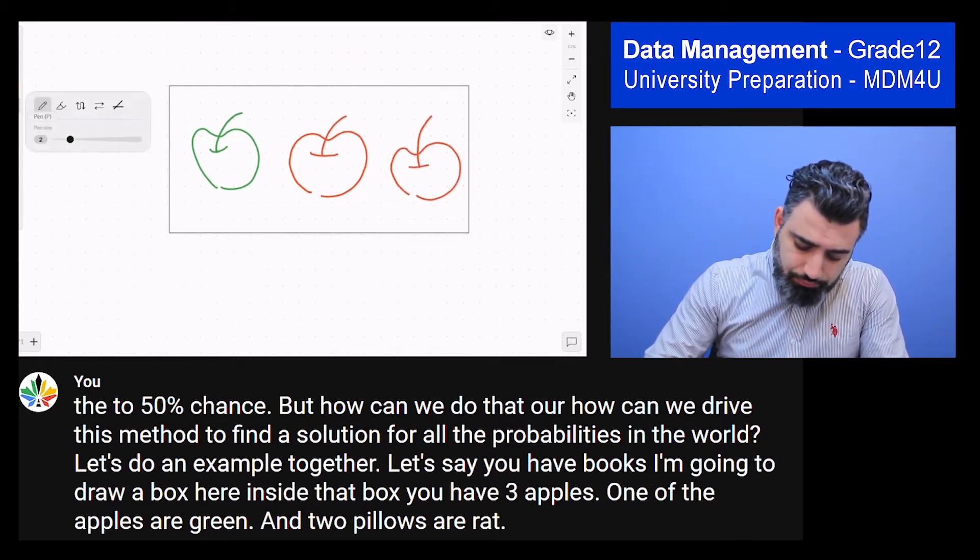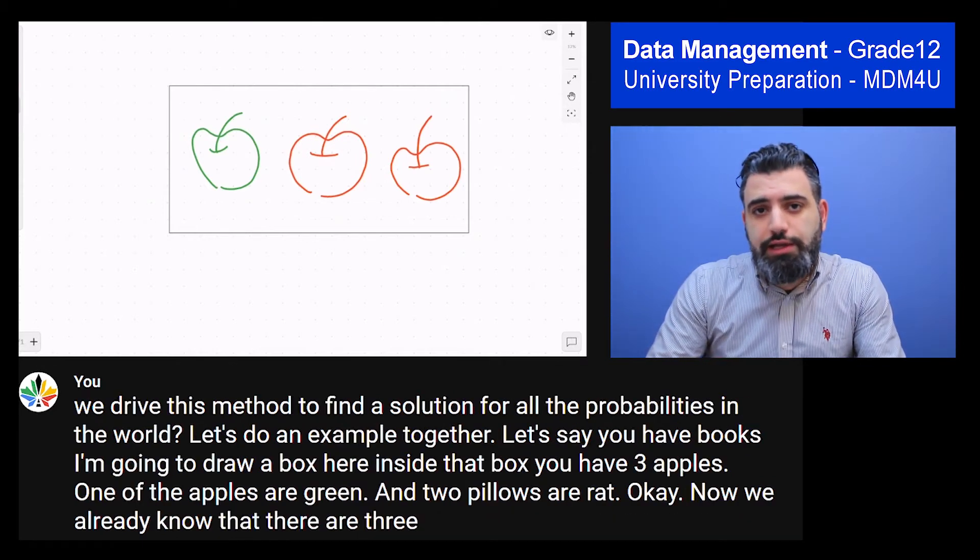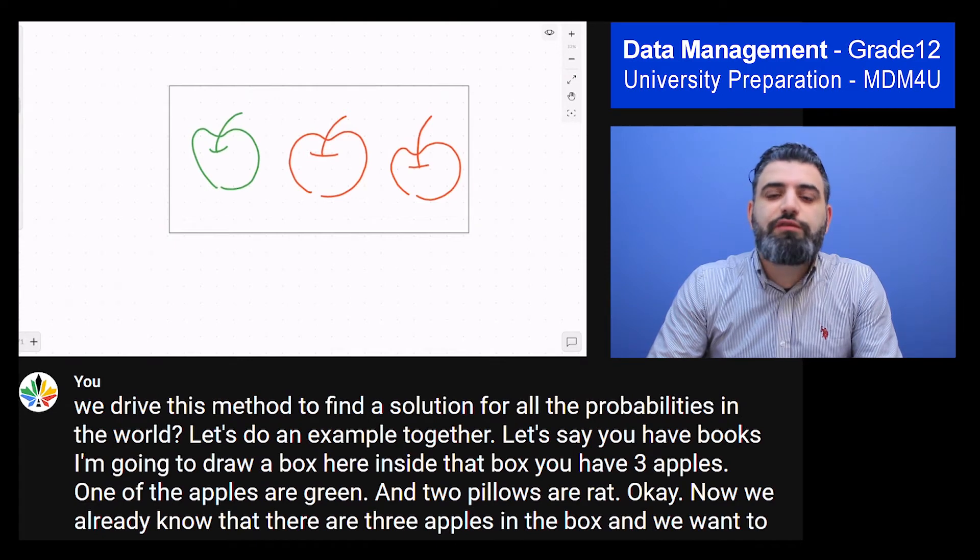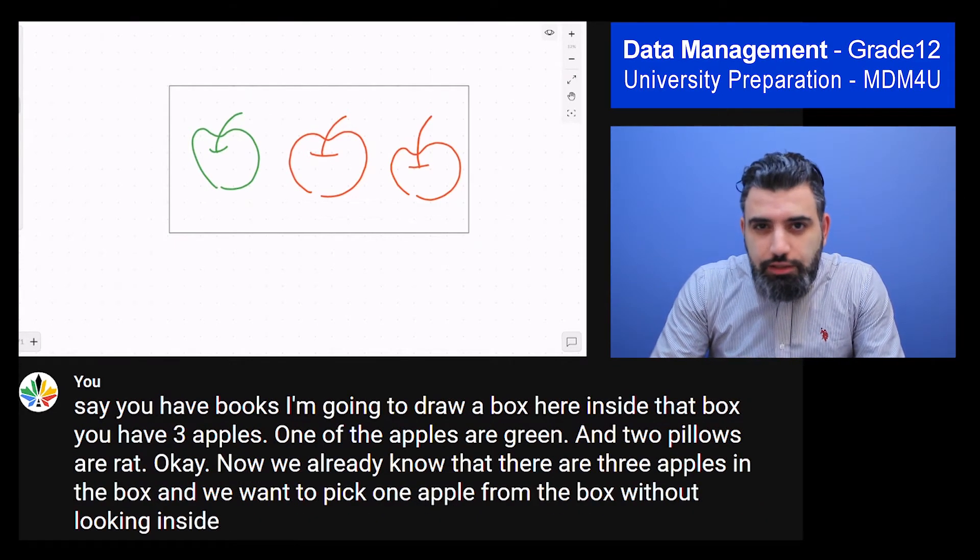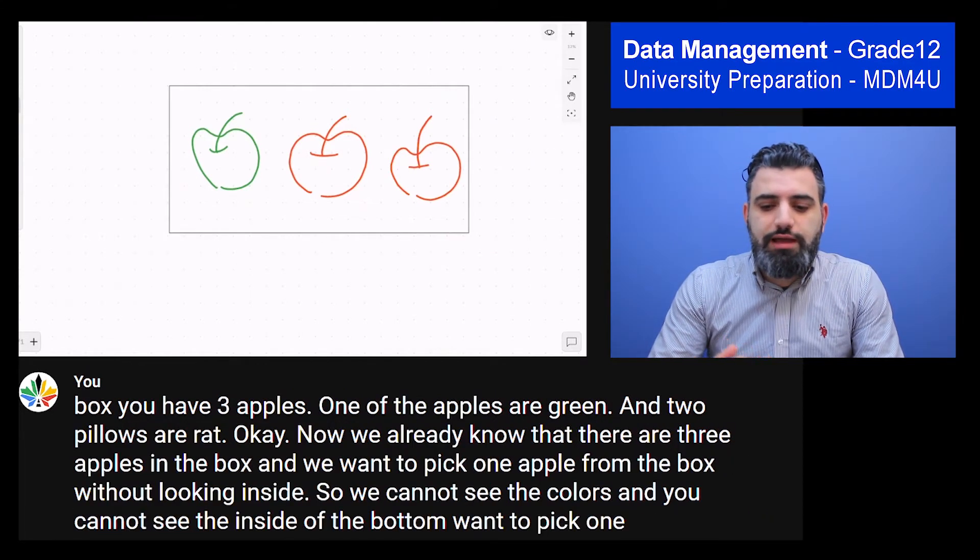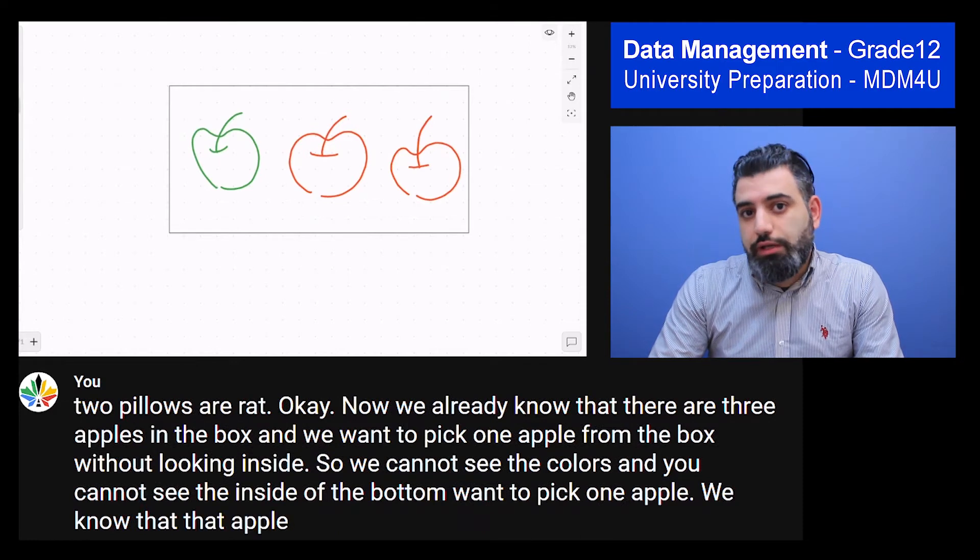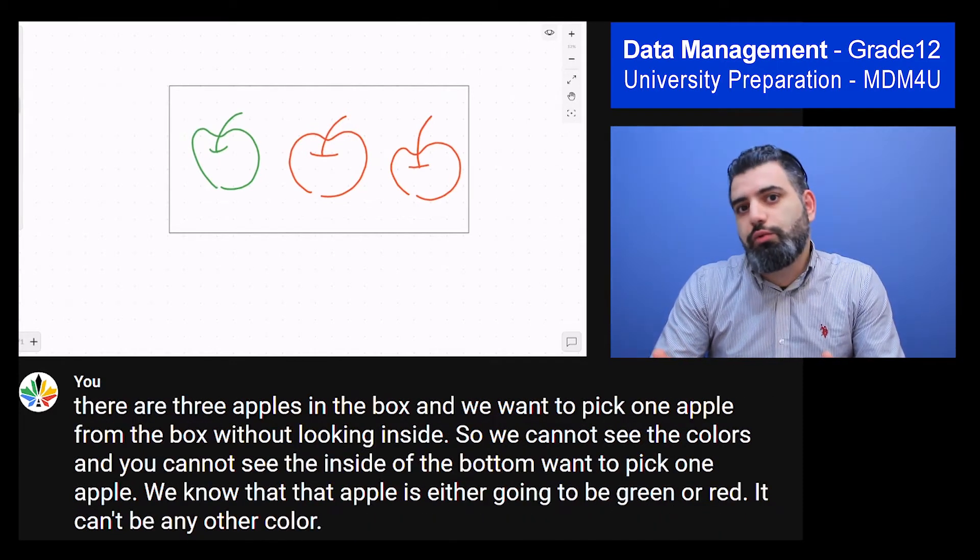And two apples are red. Now we already know that there are three apples in the box and we want to pick one apple from the box without looking inside. So we cannot see the colors or we cannot see the inside of the box when we want to pick one apple. We know that that apple is either going to be green or red. It can't be any other color.